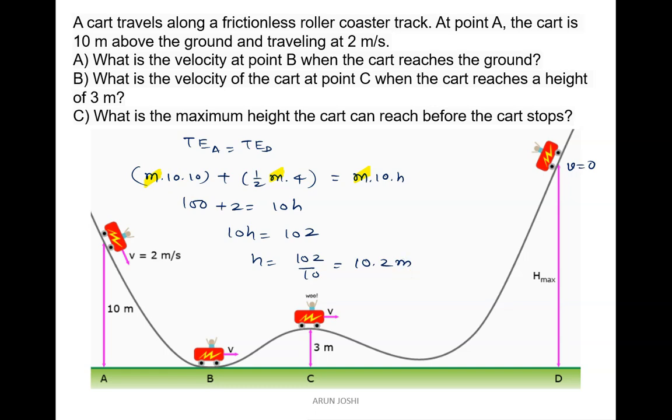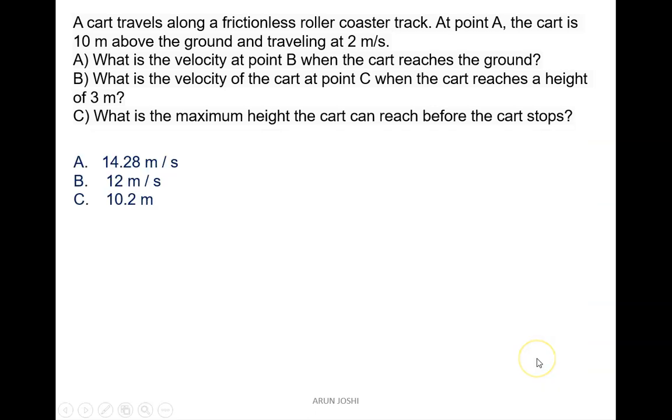So the maximum height the cart can reach before stopping is 10.2 meters. Final answers: velocity at point B is 14.28 meters per second, velocity at point C is 12 meters per second, and maximum height is 10.2 meters.